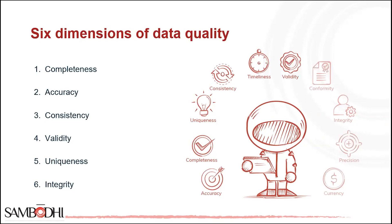First is completeness. This dimension can cover a variety of attributes depending on entity. For customer data, it shows the minimum information essential for a productive engagement. For example, if the customer's address includes an optional landmark attribute, data can be considered complete even when the landmark information is missing.